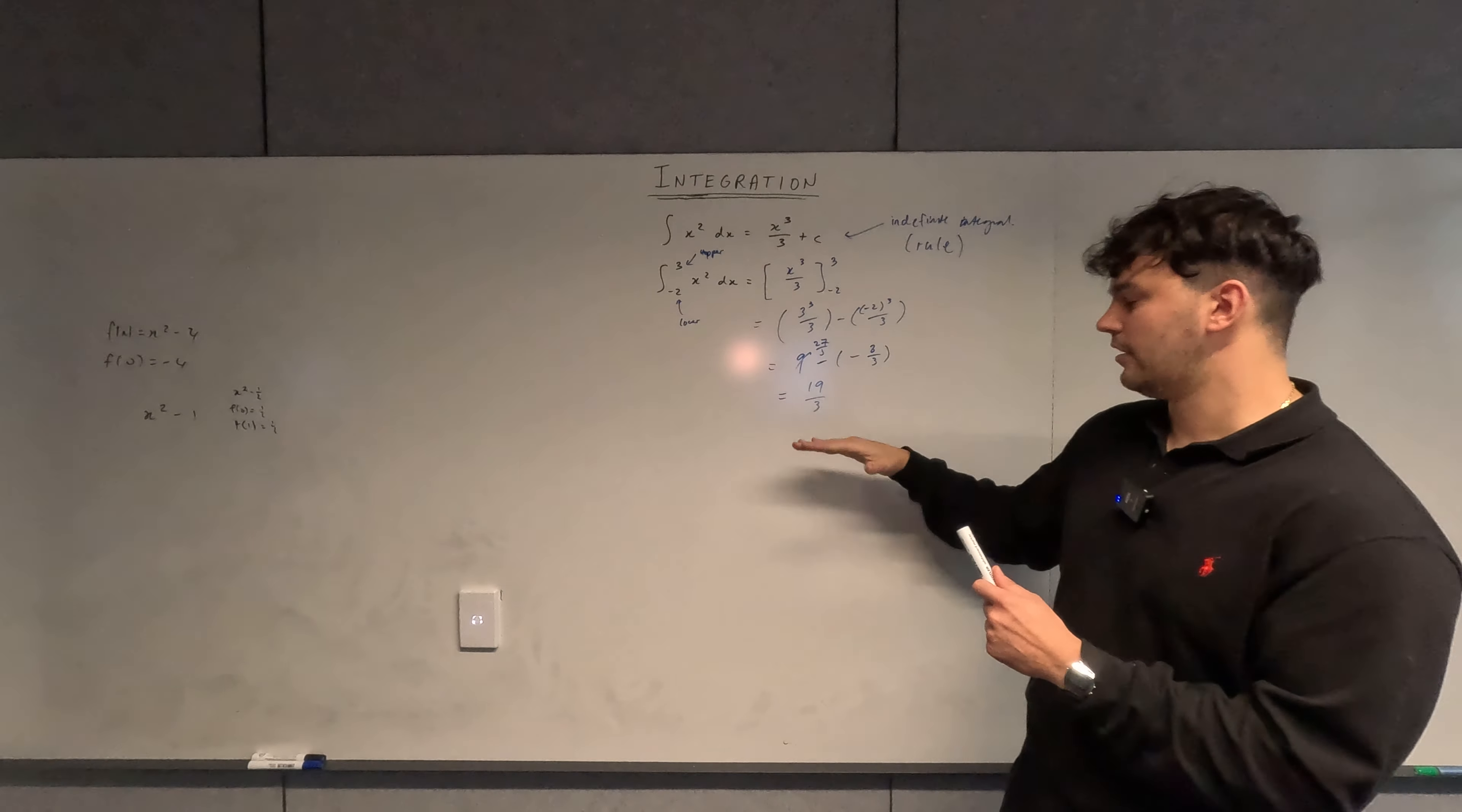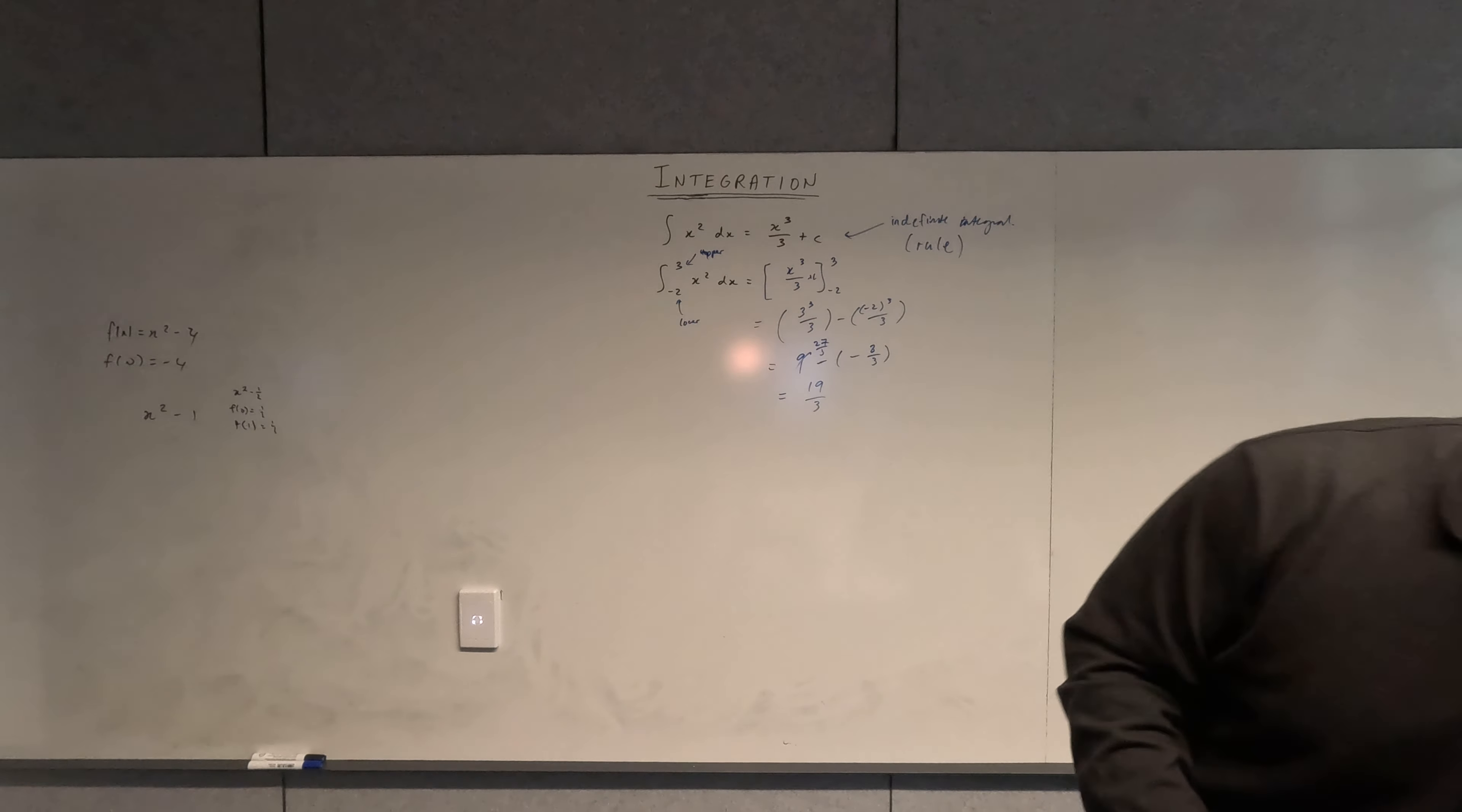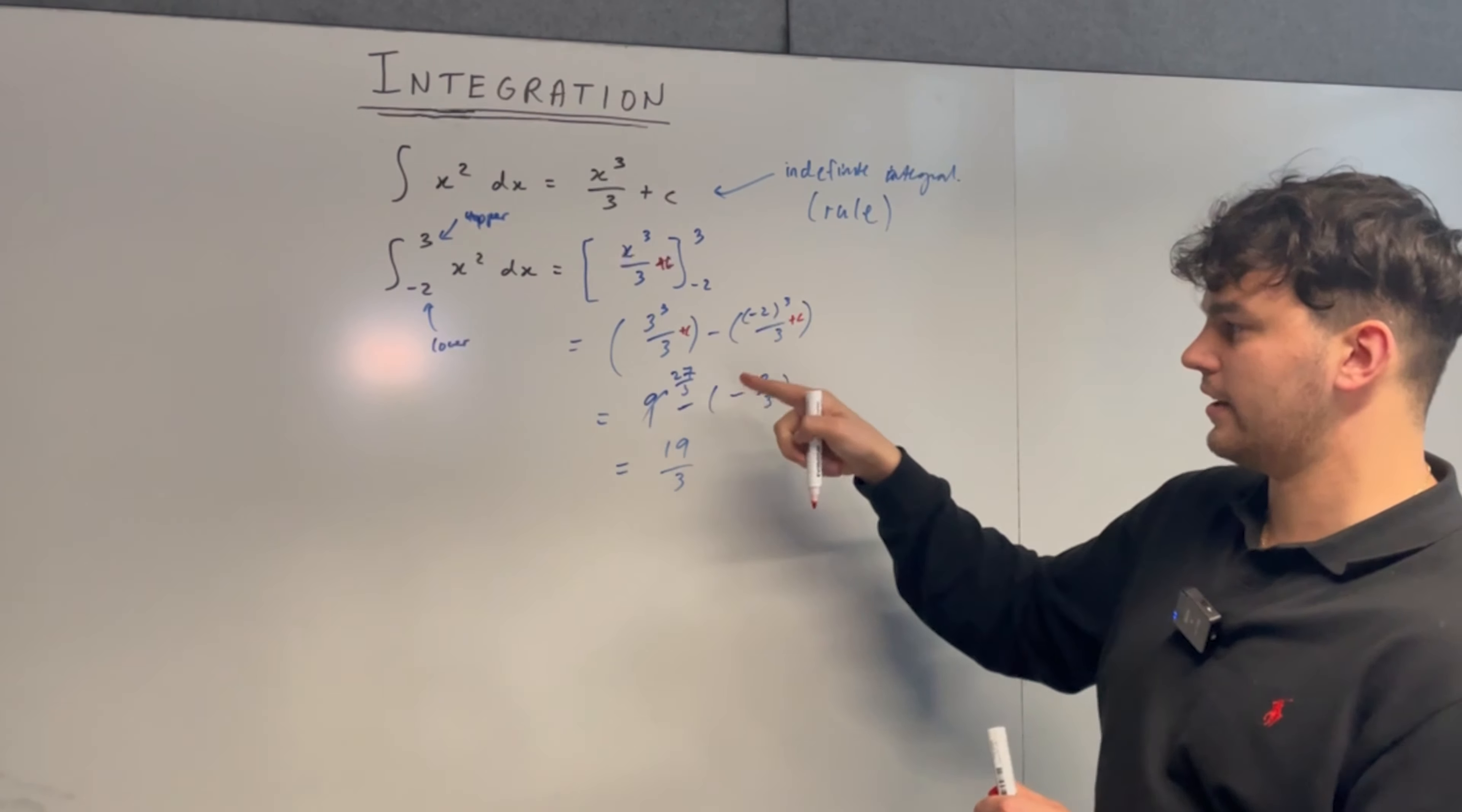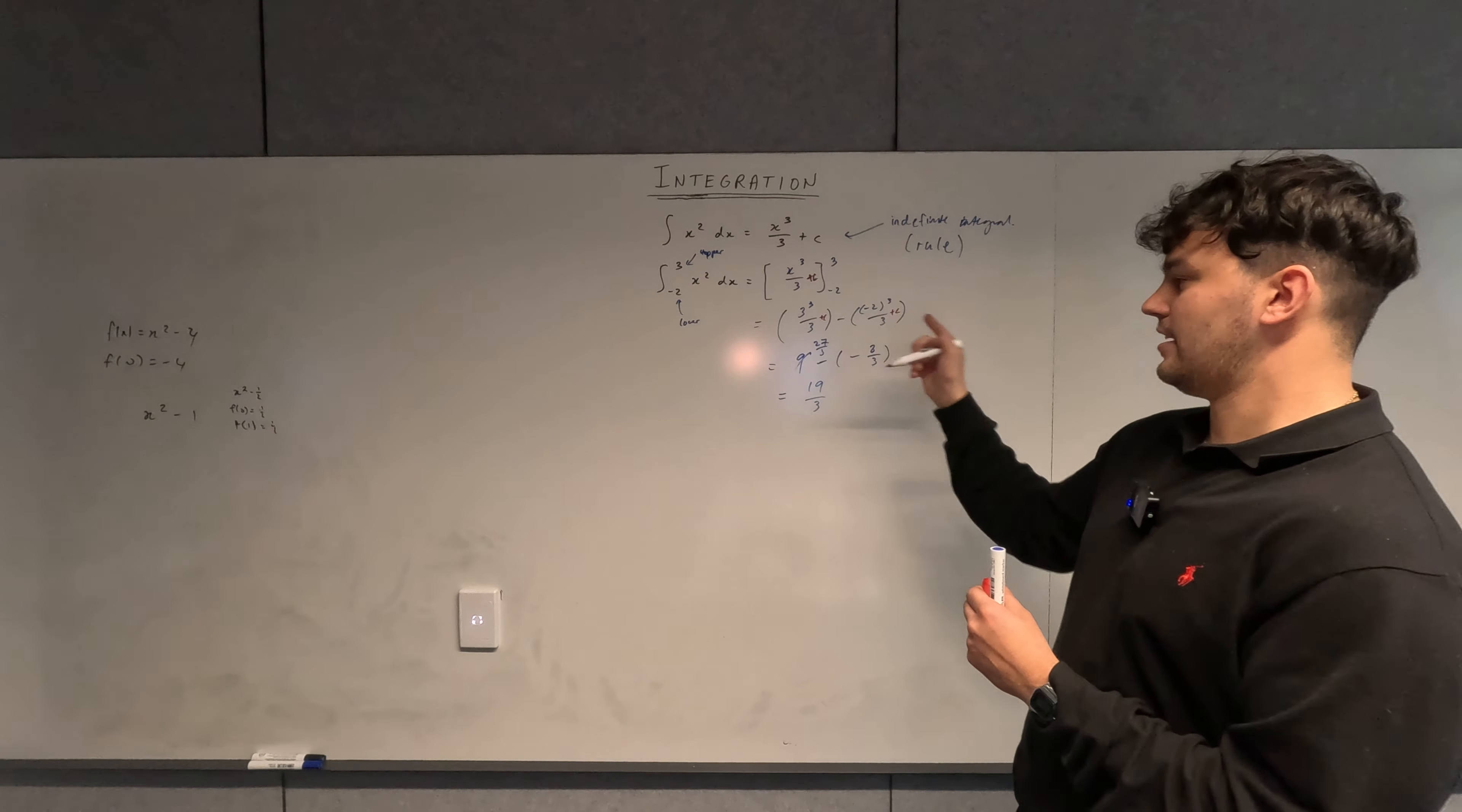Now 19 over three is our definite integral. As I said before, we don't include the plus c because if we included a plus c here, what would happen is we have plus c there, plus c there, and then when you minus this bracket from this bracket, the c's always cancel out anyway. So it doesn't matter what the constant is when you're doing definite integrals, the c's always cancel out.